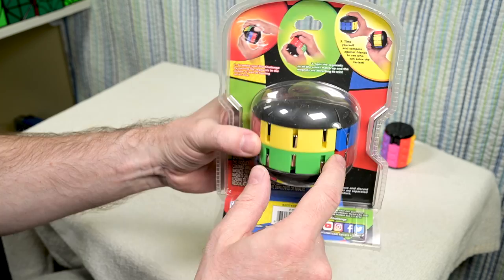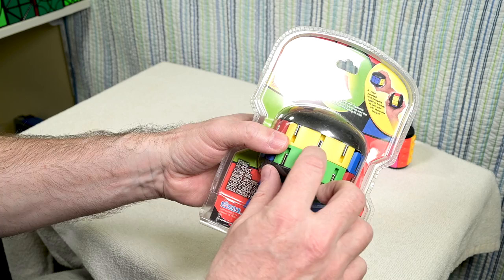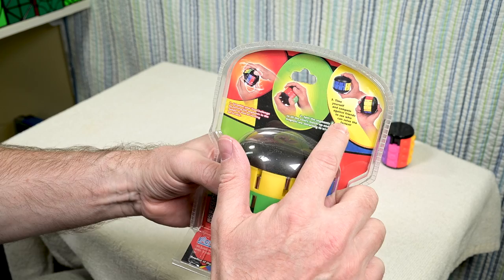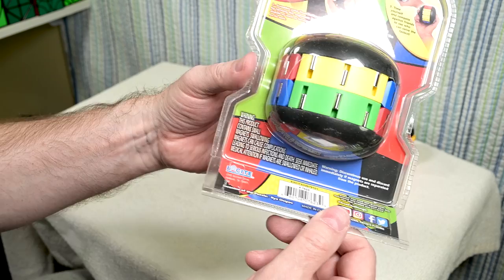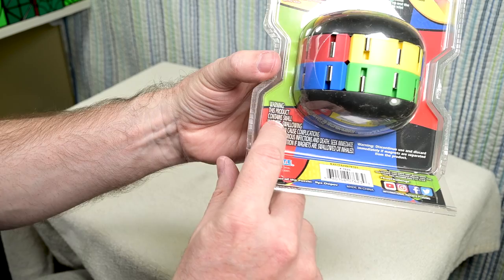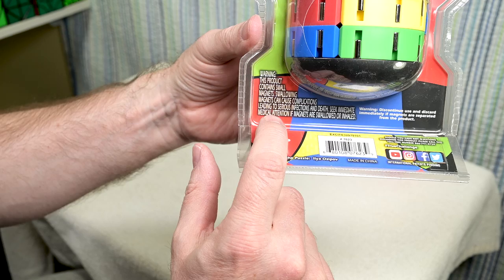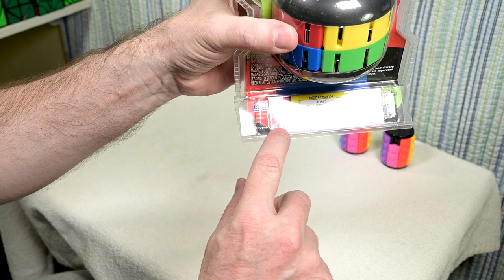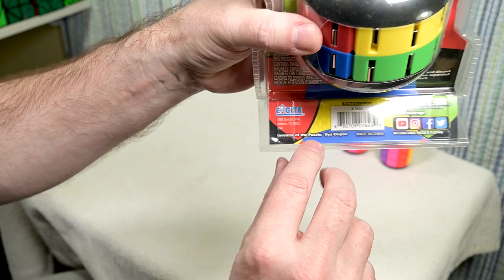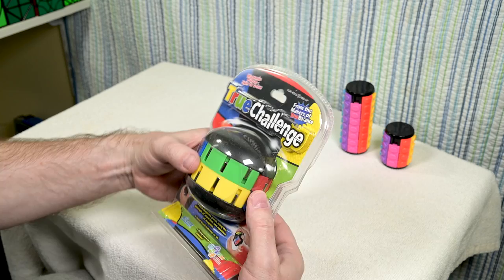So it's a scramble your true challenge by turning the segmented middle as well as turning it on its axis. So it has a split on top. So it's sort of split, not quite a two by two, but something like that. And it has these little magnets in here and time yourself to compete against friends. And then warning, discontinue to use and discard immediately if the magnets are separated from the production. Yeah, I would say so. If your cat starts chewing on this and dislodges a magnet. Oh, well, here's the big warning here. It basically, I think I can sort of summarize this by saying, if you eat these magnets, it's not going to be good for you.